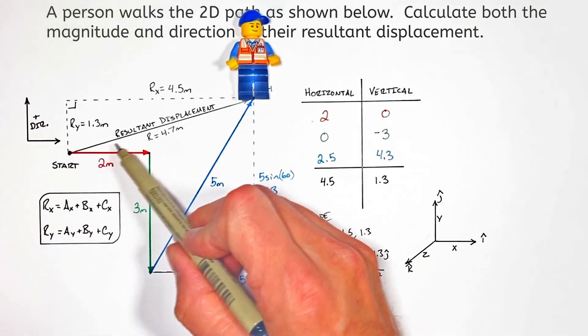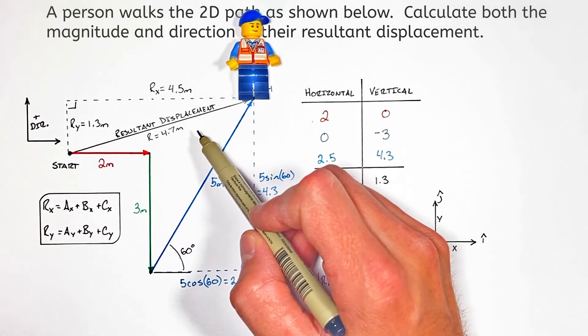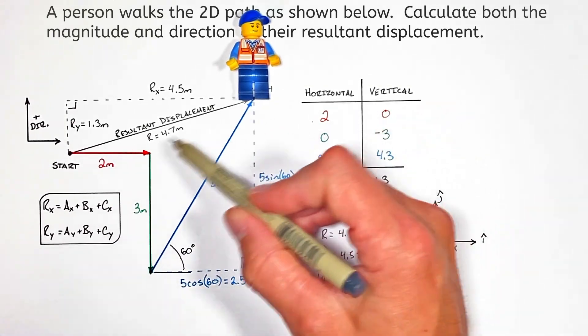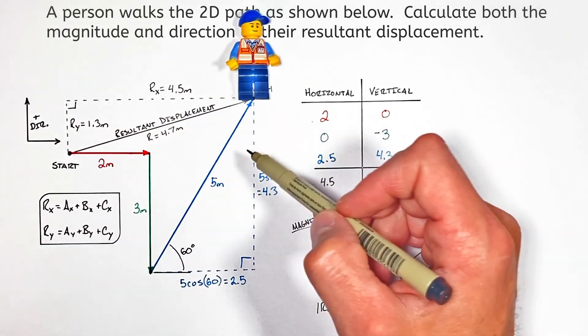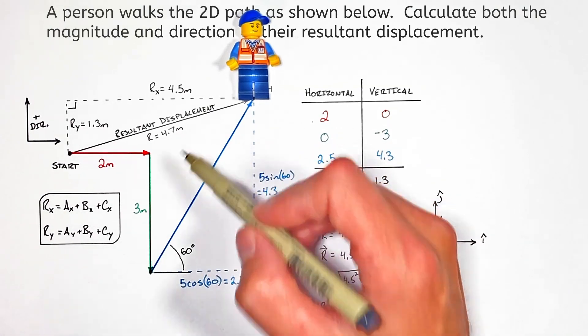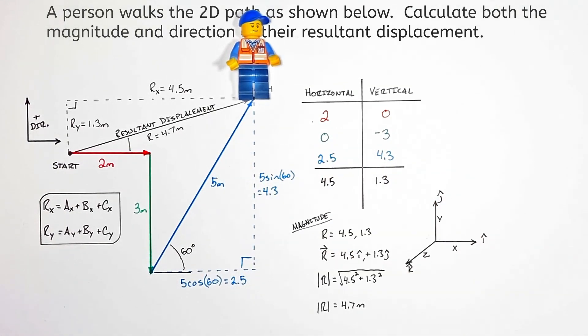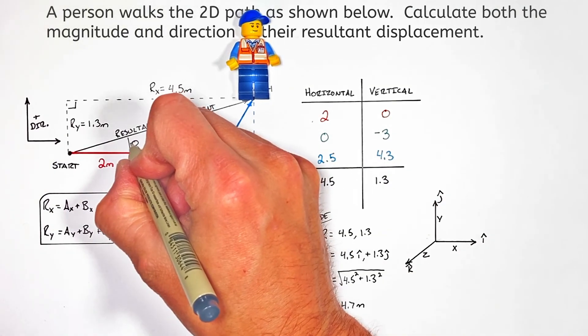Now moving on to the direction of this resultant, we can't say this resultant is just in the positive direction because that's ambiguous—it could be up, it could be to the right. So we need to be more specific. Rather than talking about up, down, or left and right, we're going to talk about an angle.